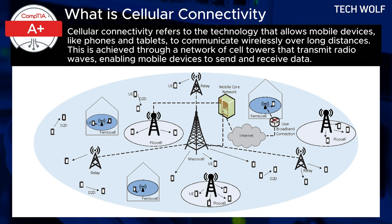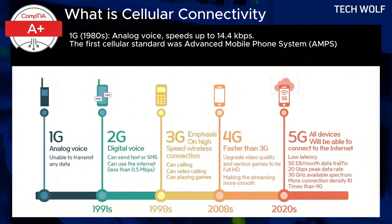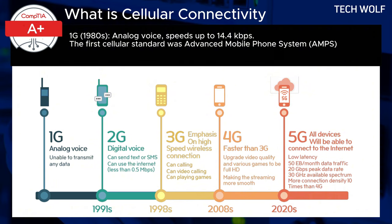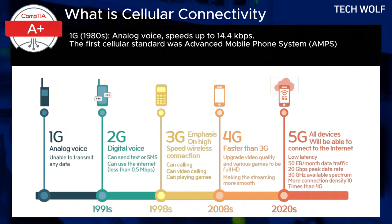Now let's discuss cellular network types and speeds. 1G — first generation — and earlier analog systems: the first cellular standard was Advanced Mobile Phone Systems, AMPS, developed in the 1980s. 1G networks were entirely analog and primarily supported voice calls with limited capacity for handling simultaneous users. These analog systems offered speeds of 14.4 kilobits per second. While revolutionary at the time, 1G networks had poor voice quality, security issues, and minimal data handling capabilities.